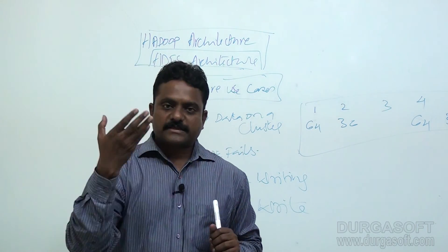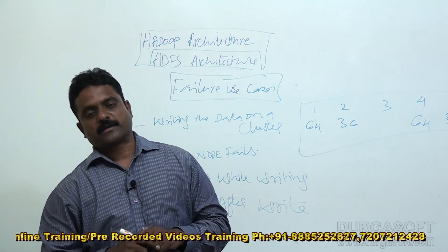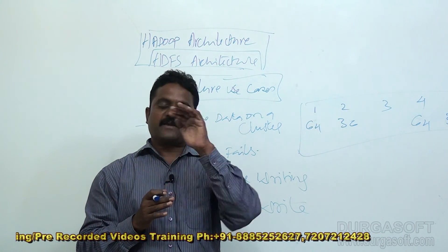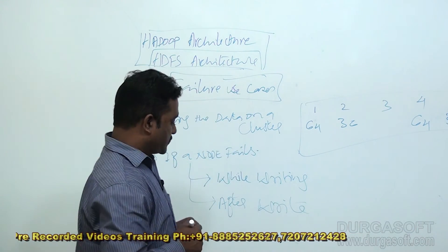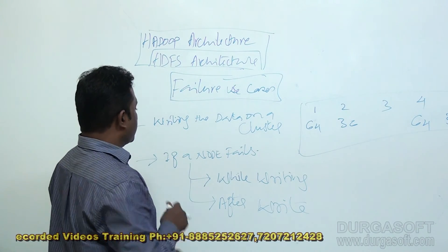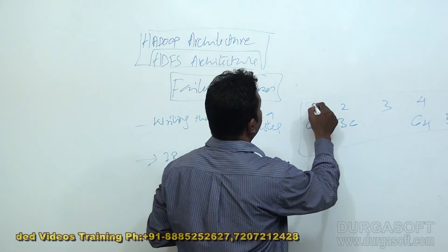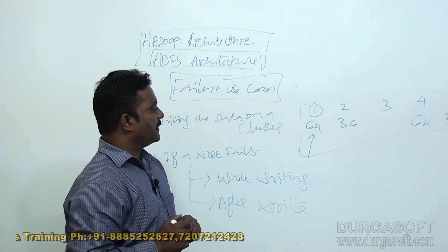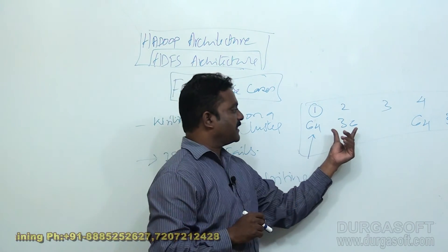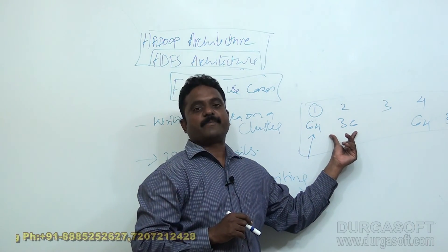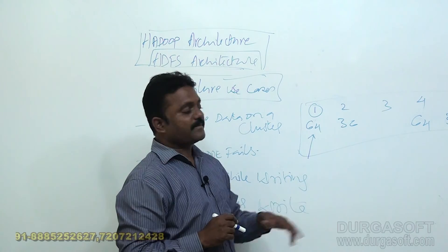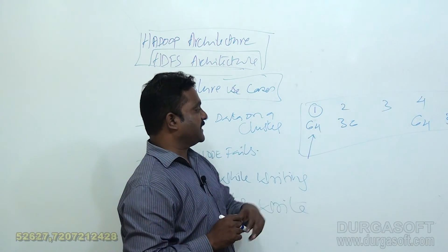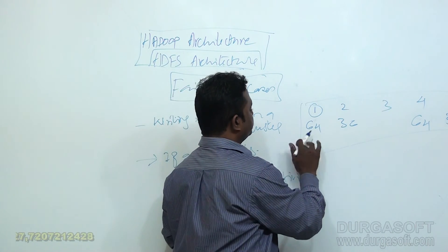When you are writing some file onto a particular block of a particular node — or after writing the entire block of one particular system — if that node goes down, let us say I am writing on this particular node. I have written this 64 MB of data. Writing on a cluster happens parallelly, so these two are being done at the same time, but this block is only 36 MB in size.